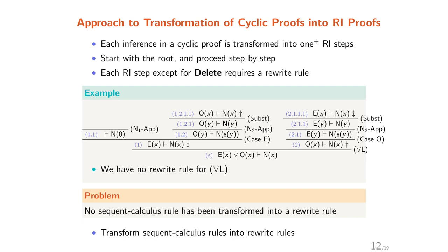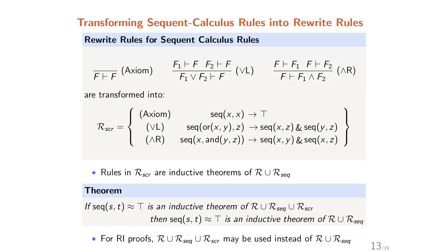We must transform the sequent calculus rules into rewrite rules. We consider three sequent calculus rules: action ORL, ANDl, and ANDr. They are transformed into the TRS R_SER. Let's see ORL as an example. We use the AND mark to indicate that all sequents should be true. Rules in R_SER are inductive theorems of R union R_SEC.